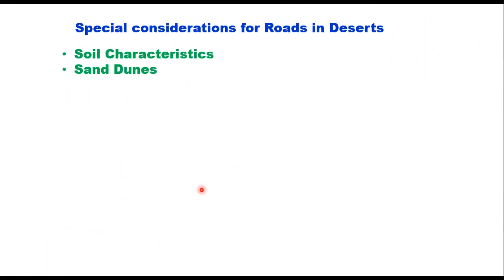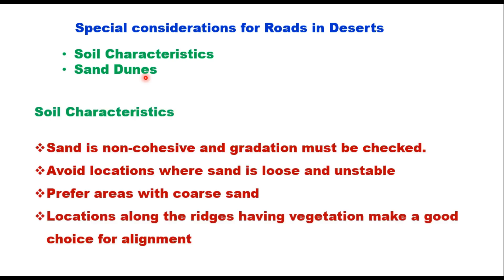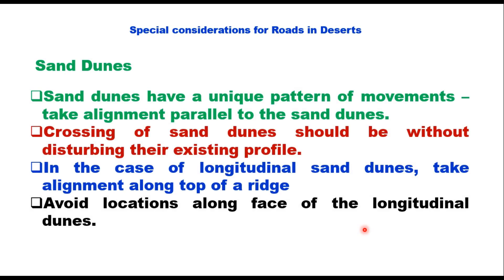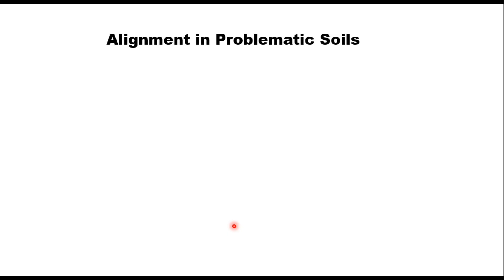For roads in desert areas, two important factors are soil characteristics and sand dunes. The soil in deserts is usually sand, which is non-cohesive and its gradation must be checked, as gradation defines the portability of sand due to heavy wind. Locations with loose and unstable sand should be avoided, and areas with coarser sand or ridges with vegetation make good choices. Sand dunes tend to shift with heavy winds. Alignment should run parallel to sand dunes, and crossing of sand dunes should avoid disturbing their existing profile. For longitudinal sand dunes, alignment should be taken along the top of the ridge.